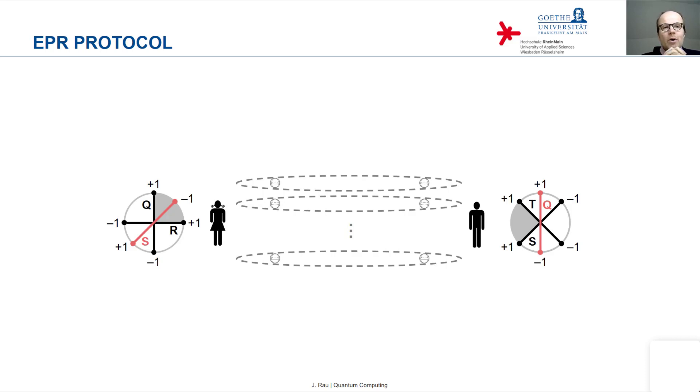So Alice tells Bob, okay, first I measured Q, then I measured R, then I measured S, then I measured S again, then Q, then R, and so on.